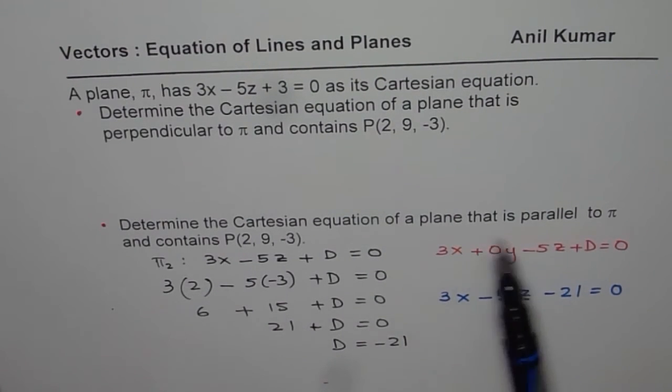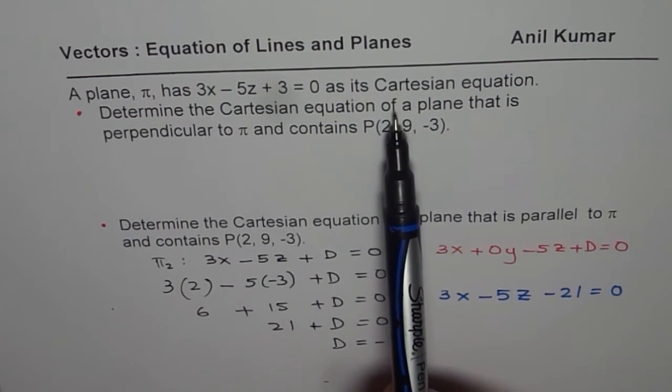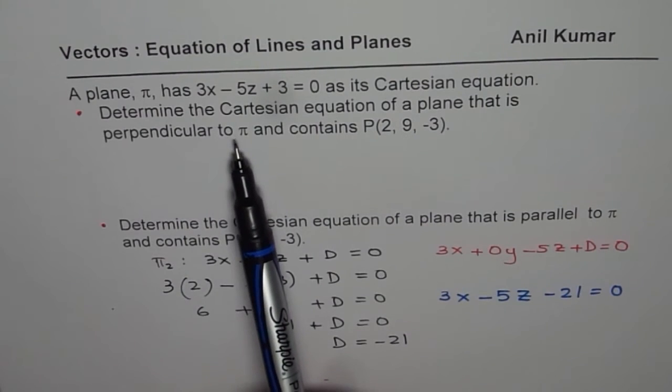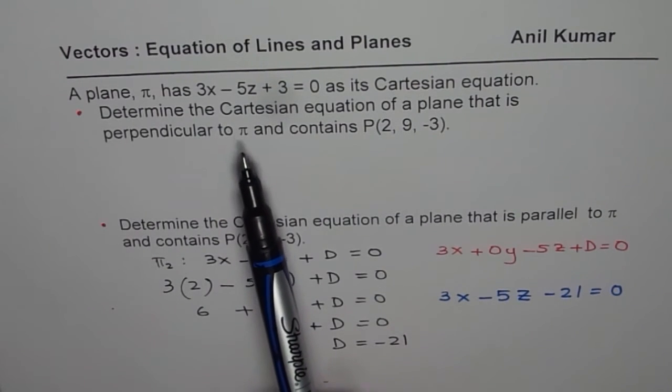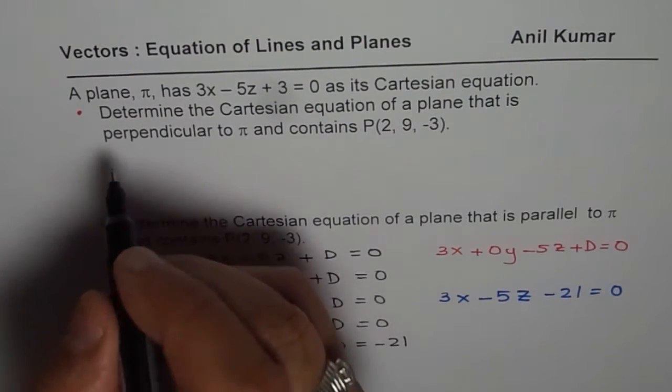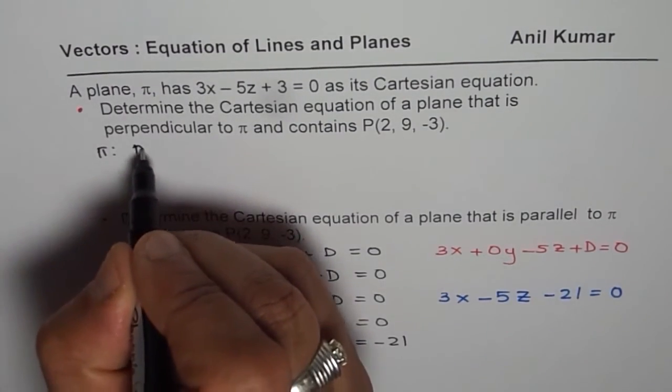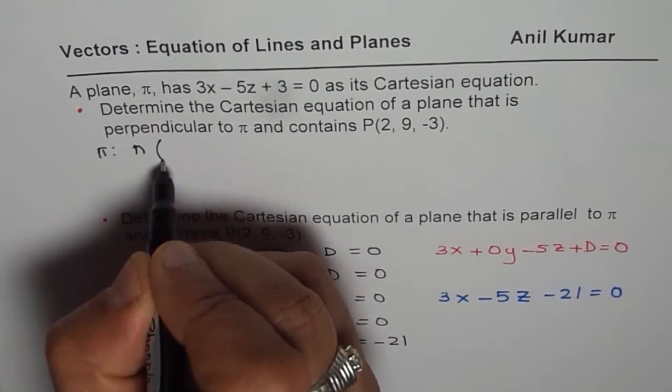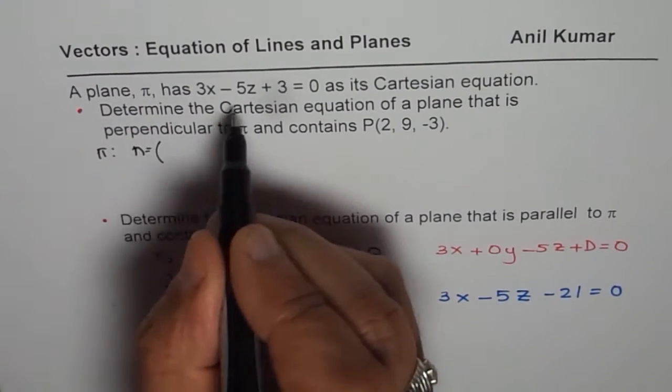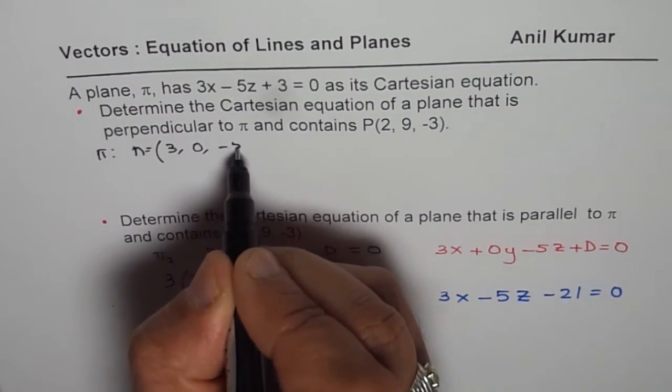Now let's get back to the part 1. It says determine the Cartesian equation of a plane that is perpendicular to this plane. Now perpendicular means we need normal which is perpendicular. Now what is the normal here? So for this plane pi, normal is what? So normal is actually equal to, we can write like 3, 0 and minus 5.